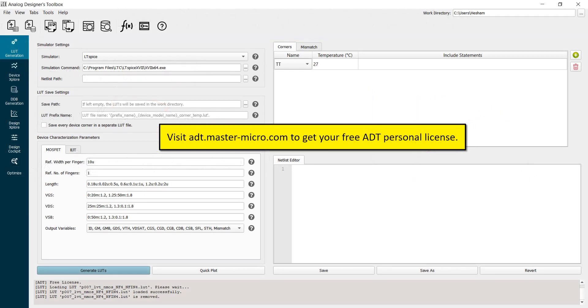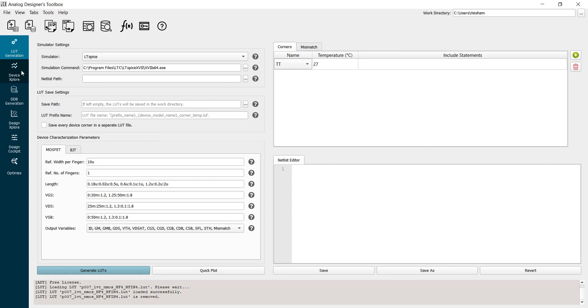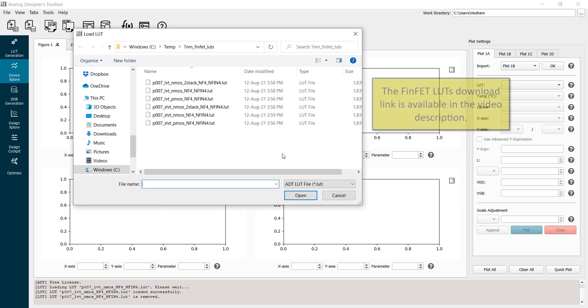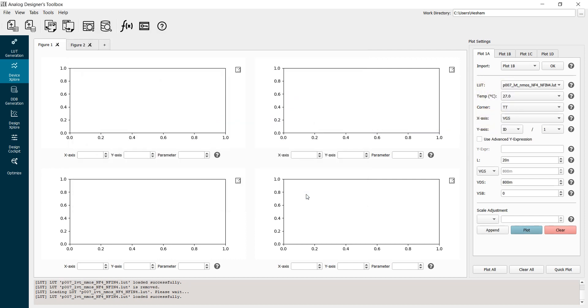So I opened an empty project in ADT. I will go to the device X-Explore interface, which enables you to plot device characteristics in a powerful and efficient way. It will ask me if I want to load lookup tables, LUTs. I will click yes. I will select the lookup table of that low VT NMOS device which I want to characterize. I'll click open here. The device will be loaded successfully, as we can see here.